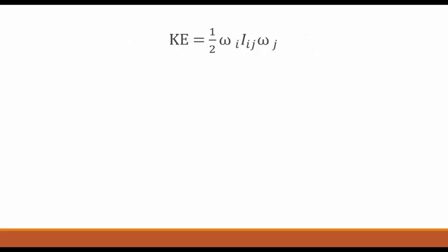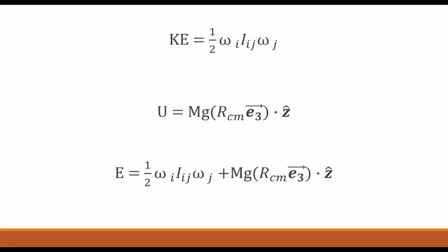Potential energy comes solely from gravitational potential, which is mg times the height of the center of mass, which is given as r center of mass times e sub 3 dotted with the z axis. And, when combined, we get the total energy.